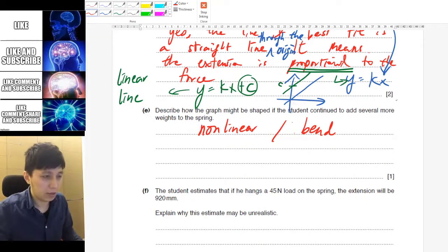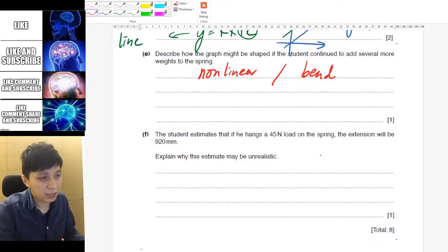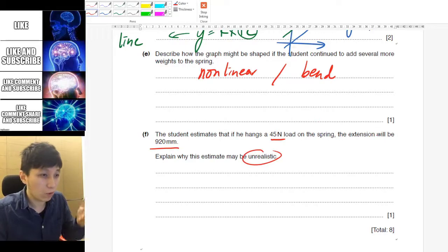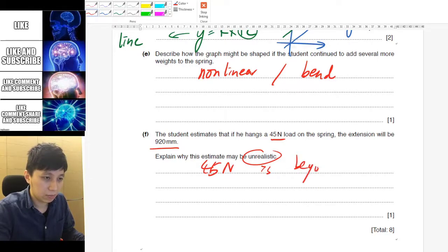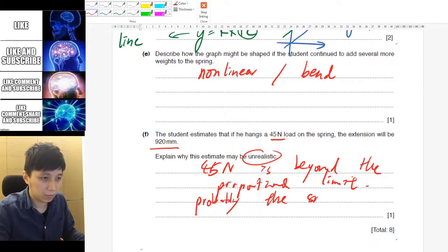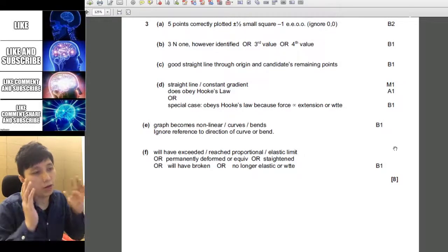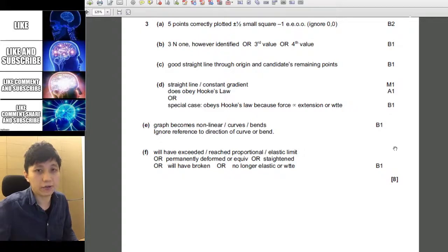Lastly, the student estimates if he had 45 newton on the string, the extension would be this one. Why this is unrealistic? Obviously, this would go over the elastic limit or proportional limit. So, you can say 45 newton is beyond the proportional limit and probably it will break actually. Probably the spring will break before 45 newton. So, here is the marking scheme for this question. If you like to refer to it, you can pause the video now and check it yourself. That is all for the video and I will see you again in the next video. Bye-bye.